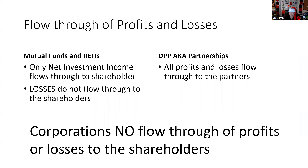In mutual funds and REITs, only the net investment income flows through to the shareholders, not the losses — losses do not flow through. The only business structure in which losses flow through, both profits and losses, are direct participation programs, also known as partnerships.